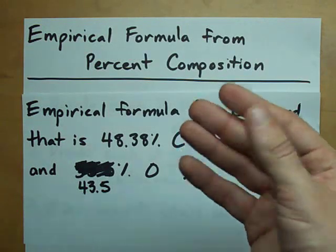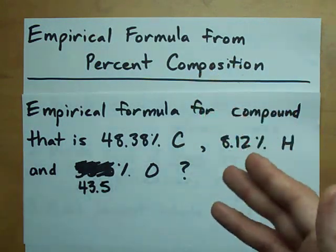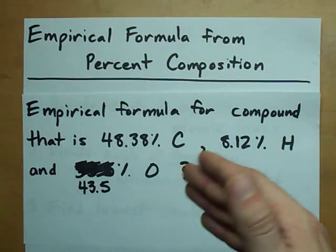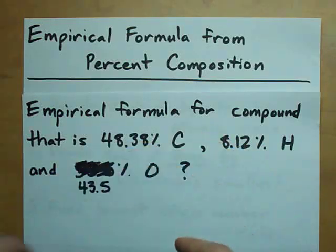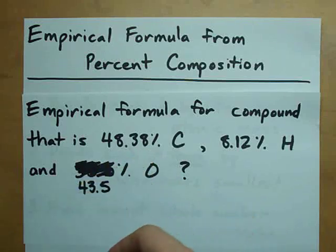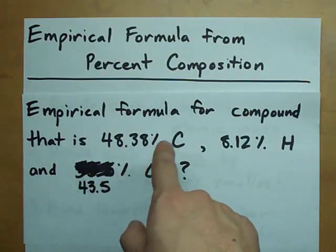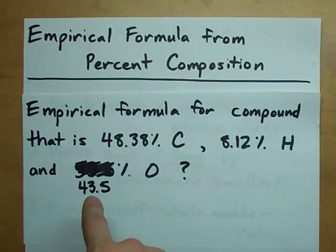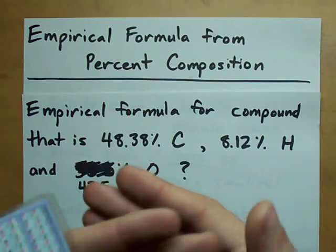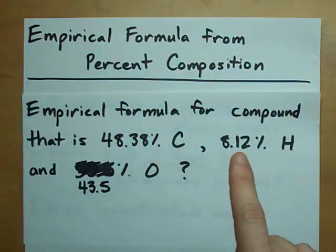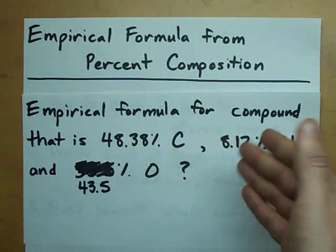For example, if you find some unknown white powder on the train or something, you want to know what it is, you can take it to your lab, you can run through a machine and the machine will tell you that it's 48% carbon, 8% hydrogen, and 43% oxygen. So what's the chemical? Well, we can get clues based on this percent composition.